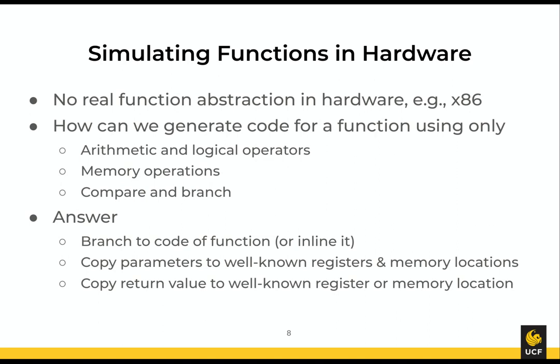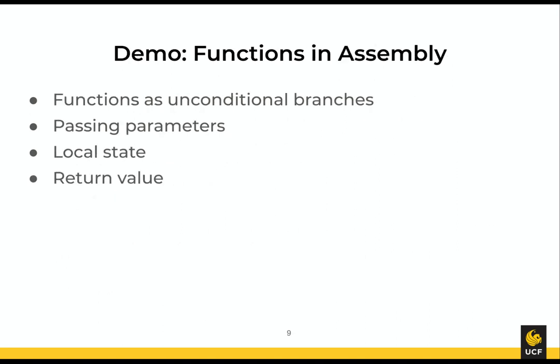We're going to use an unconditional branch to the code of a function. Note that you could also just copy the code of the function into the caller — that's called inlining. But we're just going to generate the code separately and then branch to it. In order to handle all this substitution — substituting the values — we're going to copy the parameters to well-known registers and memory locations, use the stack for that, and do the same thing with return values. So we just use move, registers, and memory for passing values back and forth, and we have branch in order to execute some other piece of code that we define to be our function.